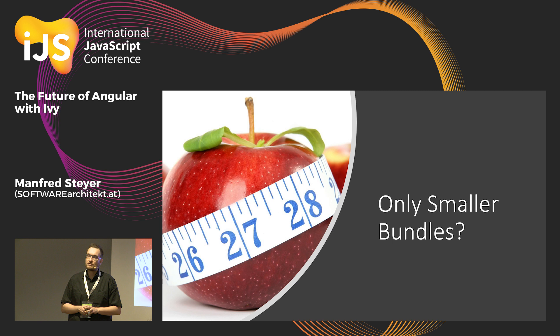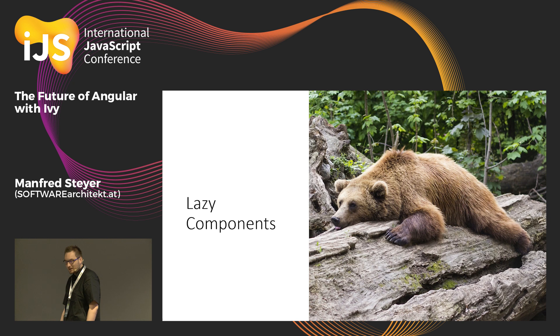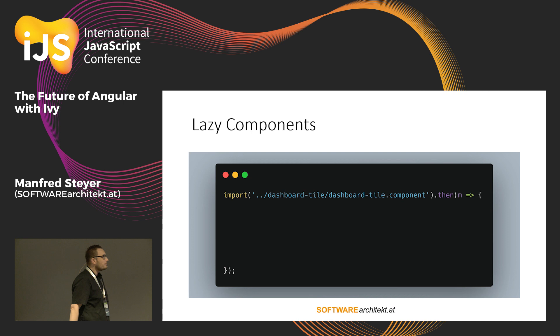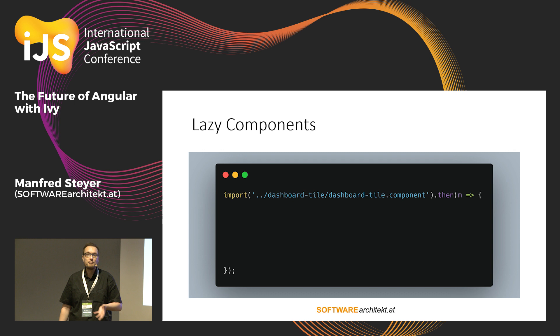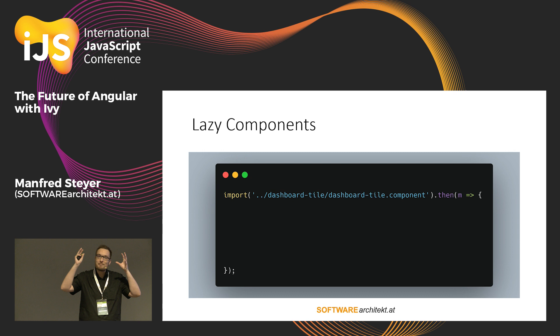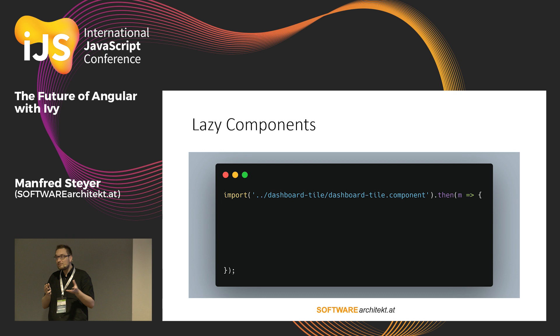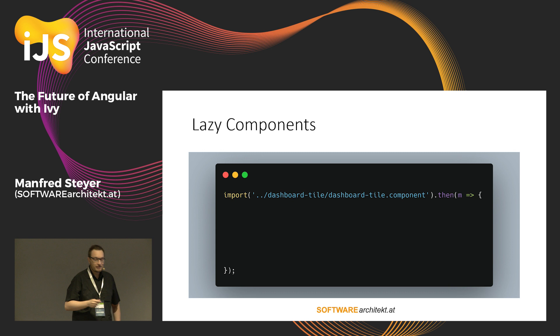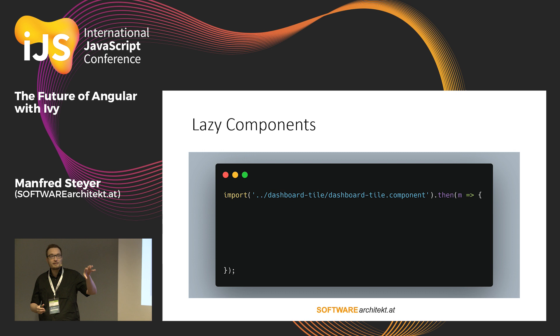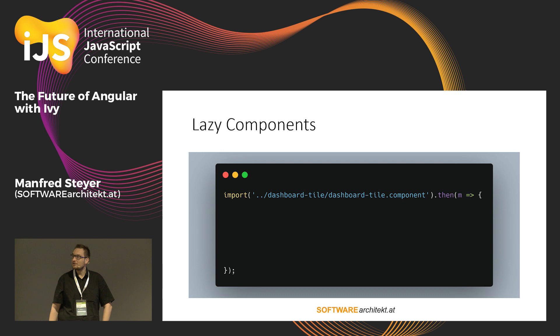In most presentations you see out there, you will see that Ivy produces small bundles. But there is a bit more other than small bundles. For instance, you can use lazy components. When you are using lazy components, you can just import a component with an ECMAScript inline import — this is quite new, it has not been possible before. Before, with the Vue engine, you have only been capable of importing modules — modules with several components in it, because the metadata of everything was part of the module. But now, the whole metadata is part of the component itself. They are calling this locality.